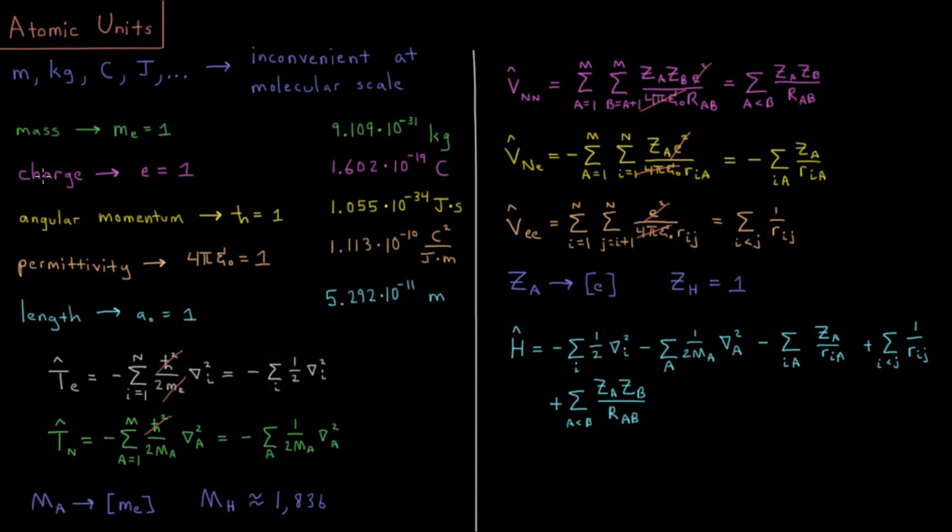For charge, we make charge of the electron equal to one, or the magnitude of the charge of the electron equal to one, which is 1.602 times 10 to the minus 19 coulombs. This is also convenient because as we see, the charge of the electron appears frequently in a lot of these energy terms.